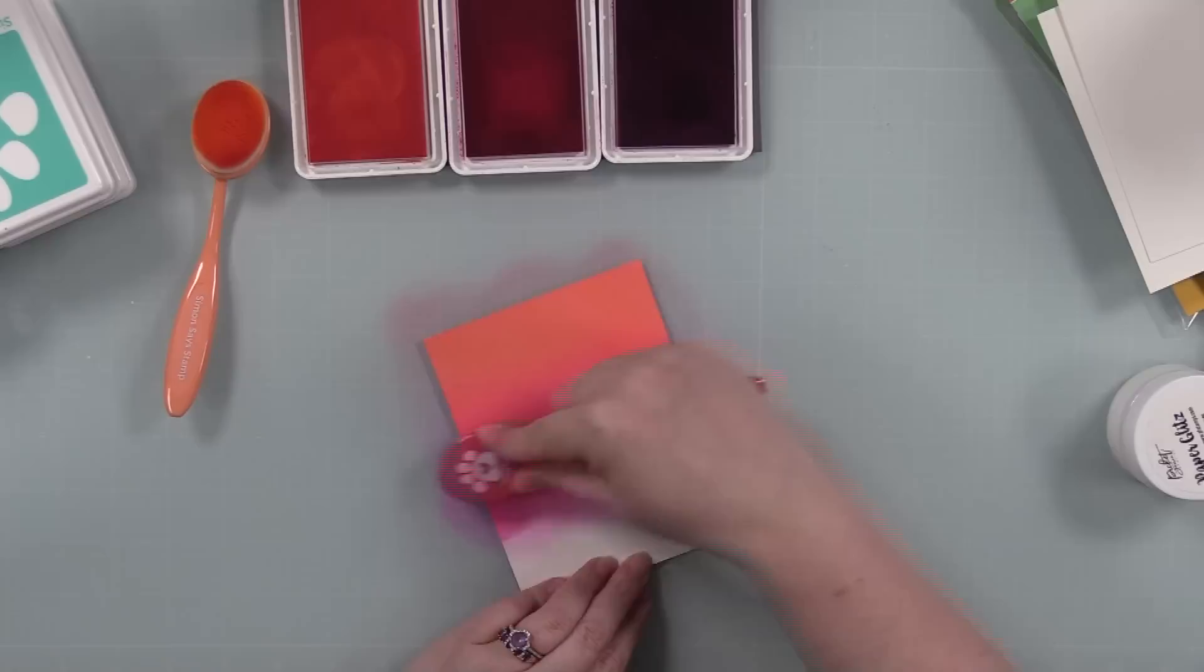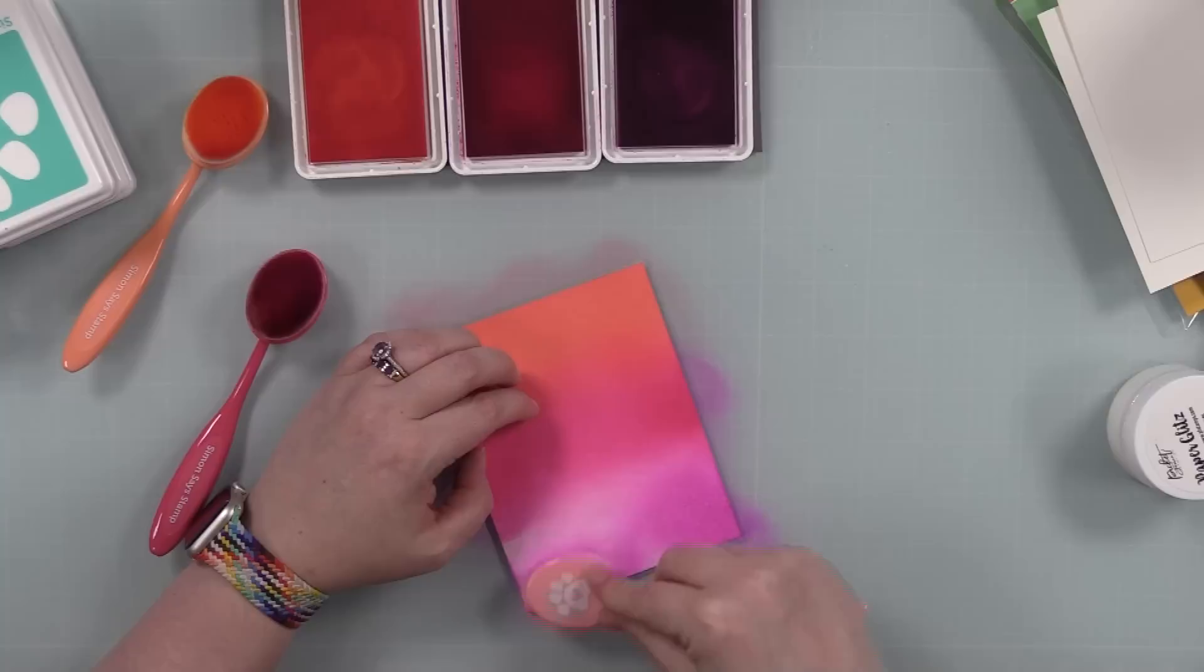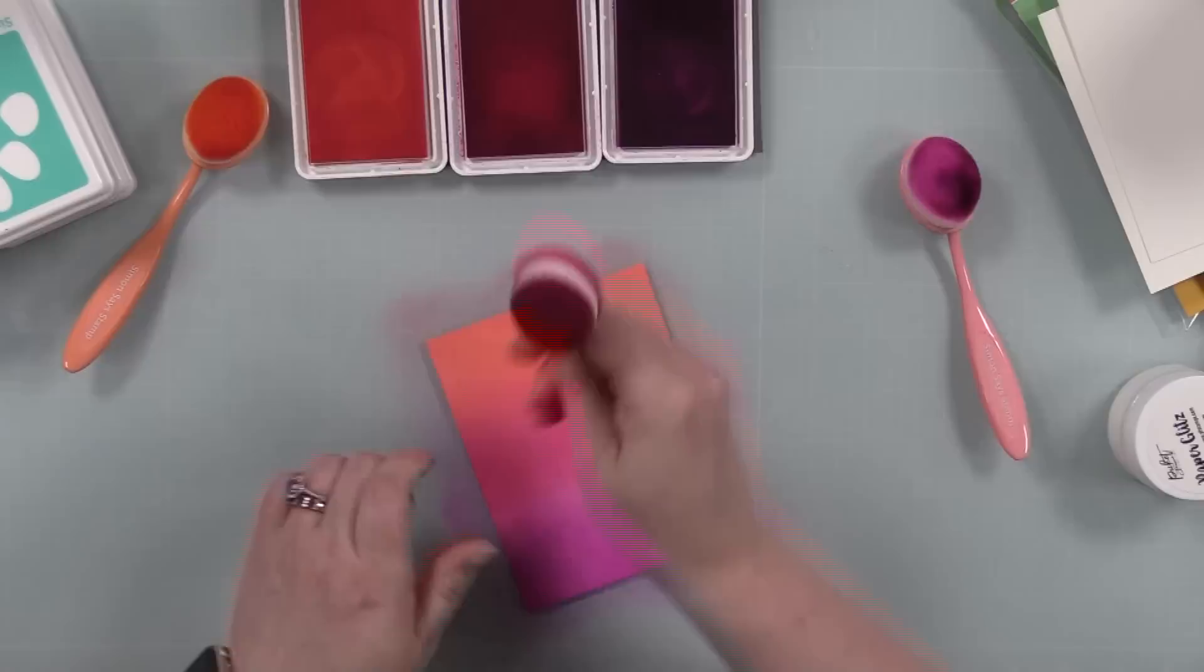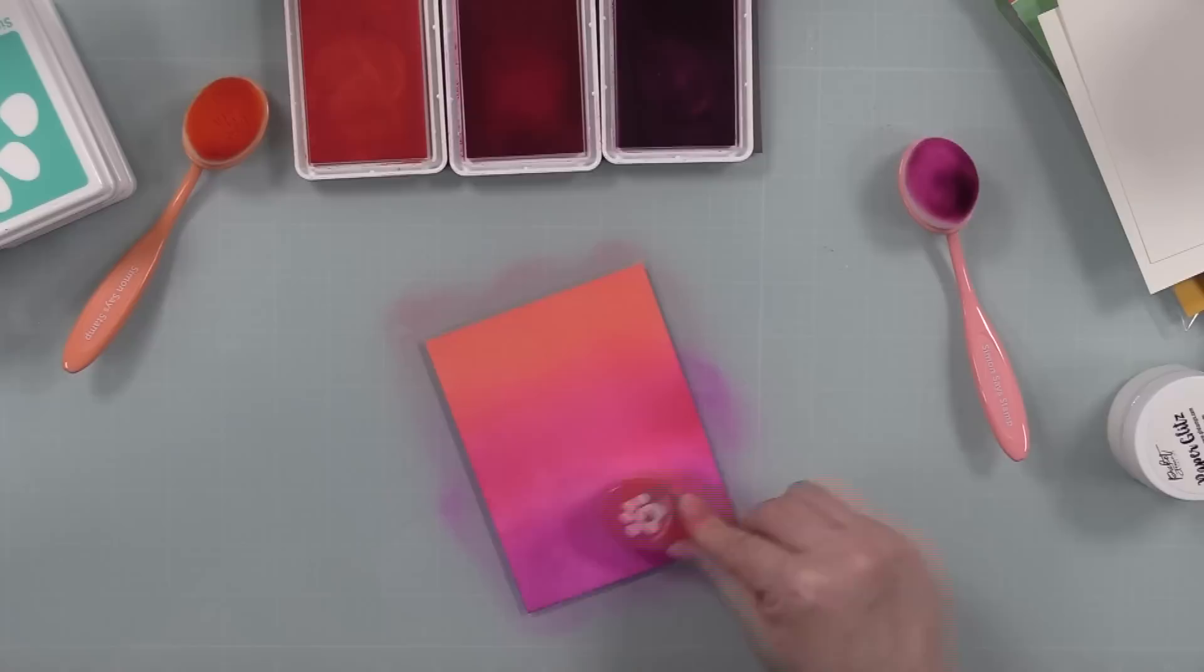Then I'm doing some simple ink blending using all Simon positively saturated inks. This first blend is blush, peony, and sweets. I'll have links to all the colors I use with the supplies. I'm just using my blending brushes and blending them.